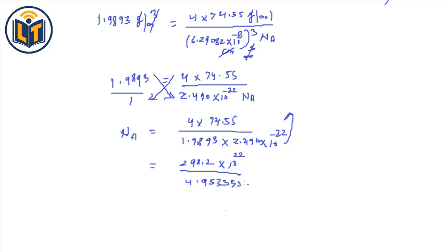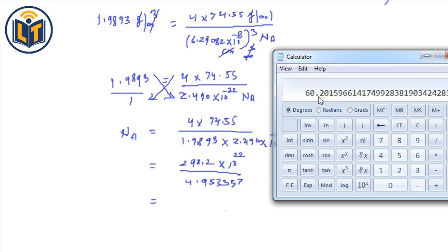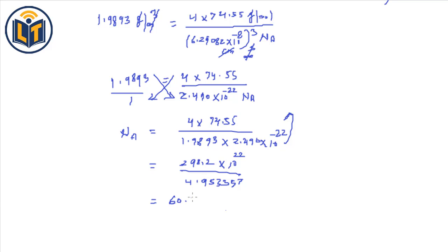Dividing 298.2 by 4.9534 gives 60.2. So we have 60.2 times 10 to the power of 22. Moving the decimal one place left gives 6.02, and the exponent becomes 10 to the power of 23. Therefore, Avogadro's number N_A equals 6.02 times 10 to the power of 23.